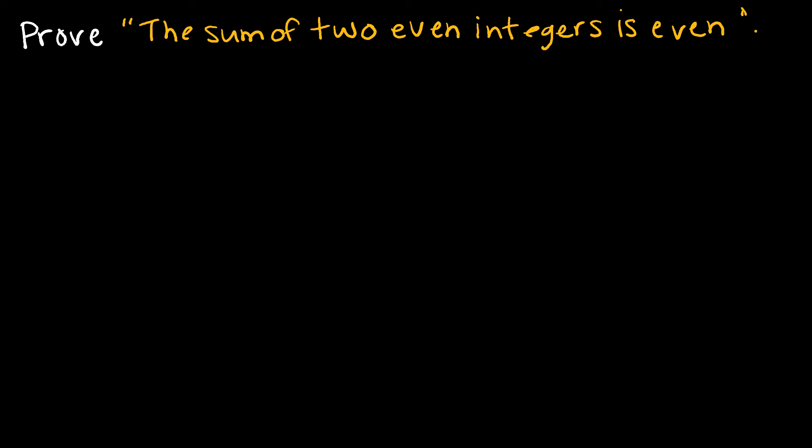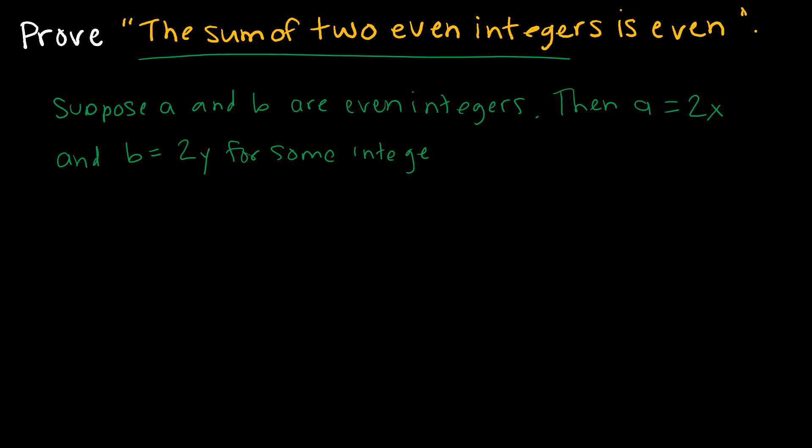So this is our second example that we're doing together, and it's always a good idea to challenge yourself to try to actually do the proof yourself first. So if you're so inclined to press pause right now, go ahead and prove that this is true, and then check your work against what I come up with. All right, so we have proved the sum of two even integers is even, so I'm going to assume that I have two even integers. So I'm going to say, suppose A and B are even integers. I'm assuming that that is true. Then A equals 2X or whatever letter you choose, and B equals 2Y for some integers X and Y.